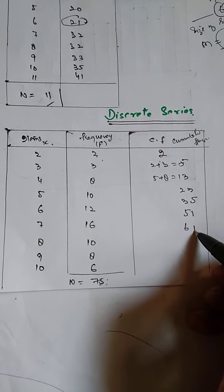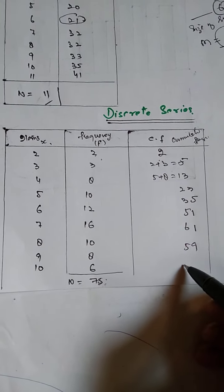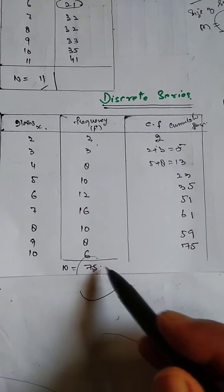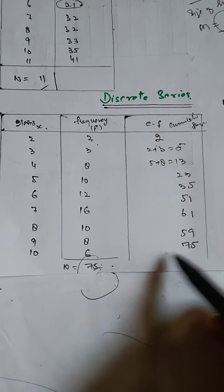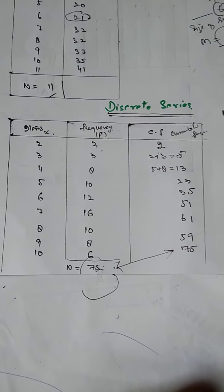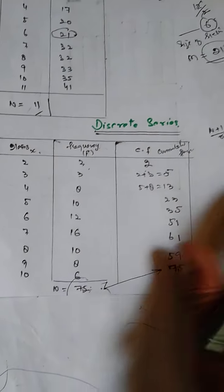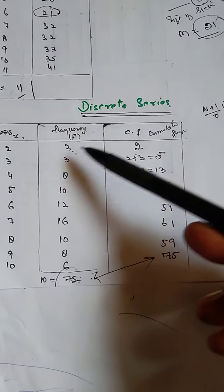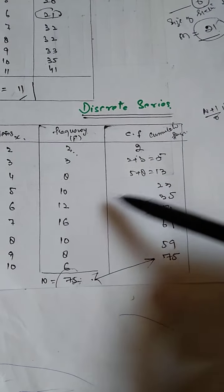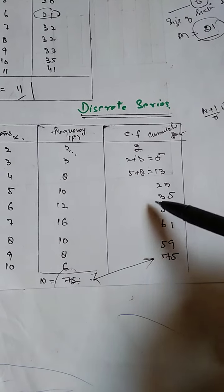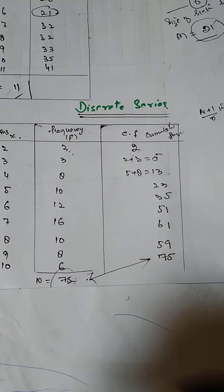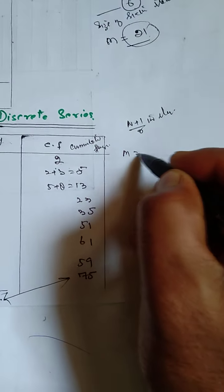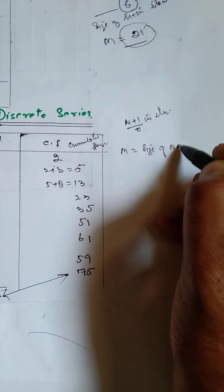Then 5 plus 8 is equal to 13. In this way we go ahead: 23, 35, 51, 61, 69, and 75. Remember that the last item of the CF and our total will be equal, that is 75 equals 75. So we get cumulative frequency. Here we take the summation of all frequency: 2 plus 3 is 5, 5 plus 8, 8 plus 10, and so on.